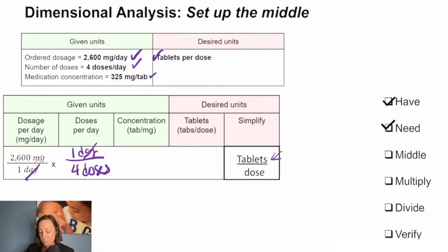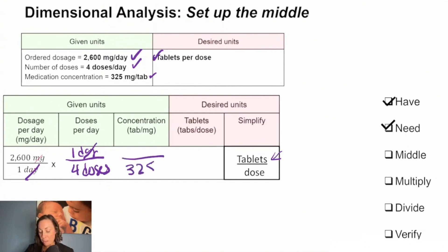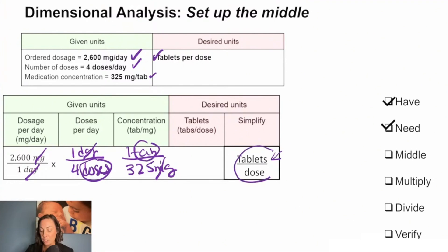I need to decide whether milligrams goes on the top or the bottom. We need milligrams to cancel since we need tablets per dose. So I will put 325 milligrams on the bottom and the tab on top. By doing this, milligrams cancel, and we're left with tabs per dose, which is exactly what we're trying to find.